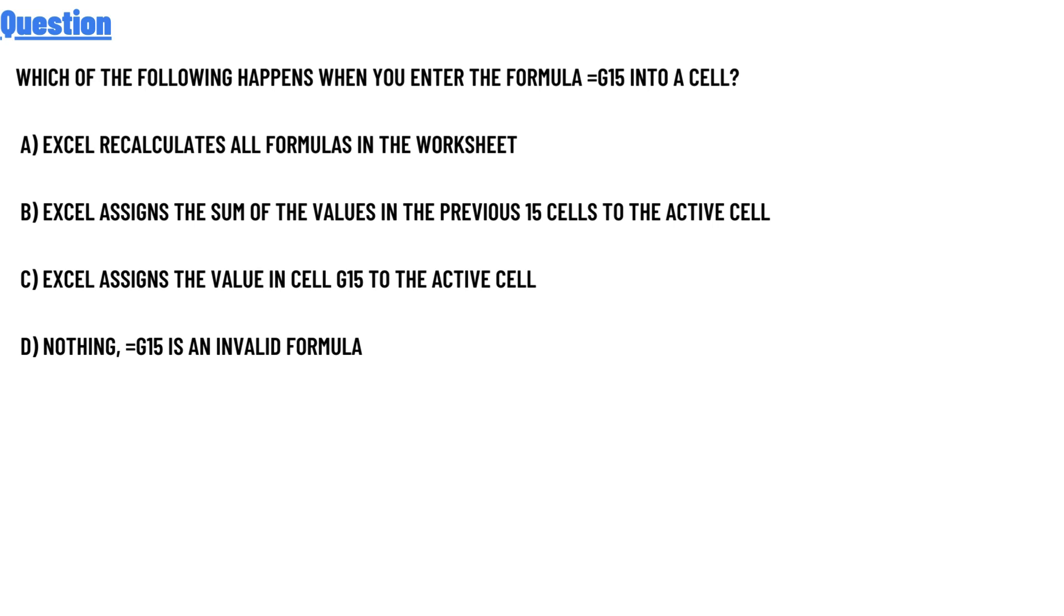Option C: Excel assigns value in cell G15 to the active cell. Option D: Nothing, G15 is an invalid formula.